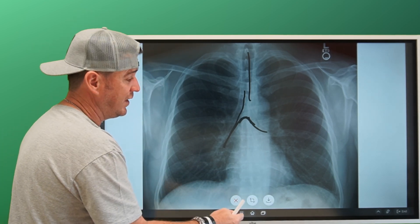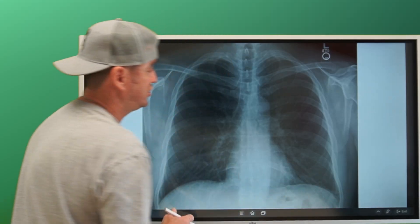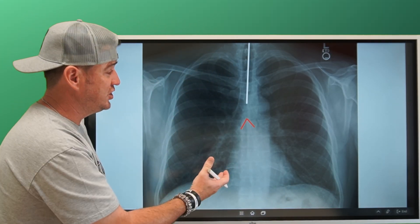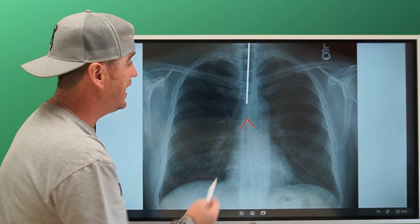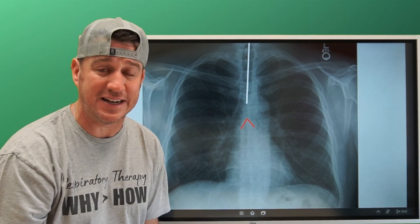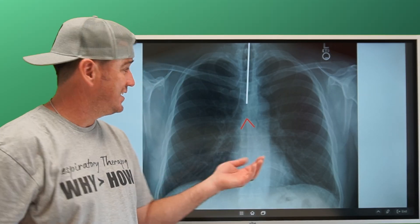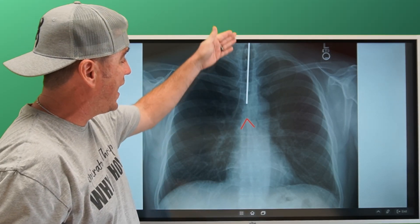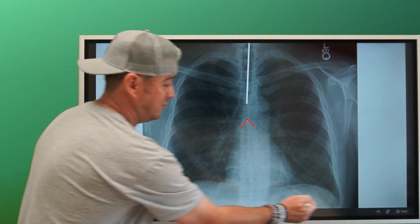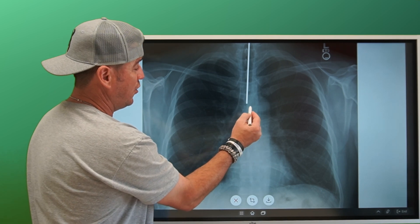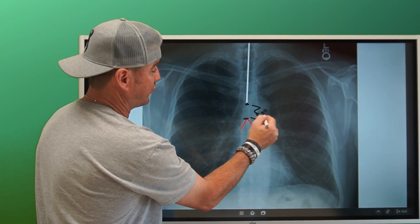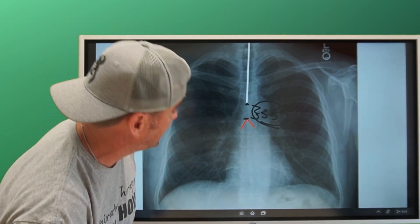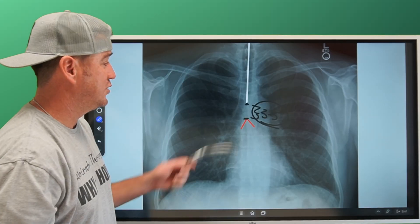Now let's look at one with an actual tube on the image so you can see what I'm talking about. This shows a similar chest x-ray, but now I've identified the carina for you. We see the carina right there and we see this white line — I had to simulate one since the patient didn't have an endotracheal tube — but that's what it would look like. You'd see a white line coming down, and then you measure the distance from the tip to the carina. Again, we want approximately three to five centimeters.